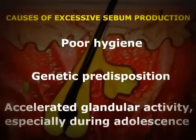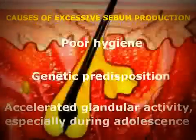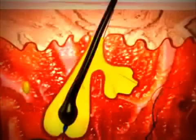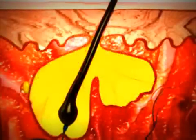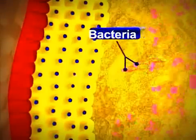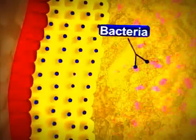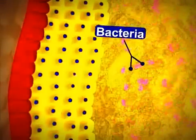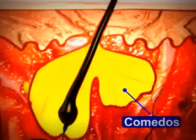During an acne breakout, the pore of the hair follicle is plugged by a mixture of sebum and cells that line the hair follicle. The trapped sebum allows bacteria to grow in the plugged follicles, forming the primary acne lesion called a comedo.